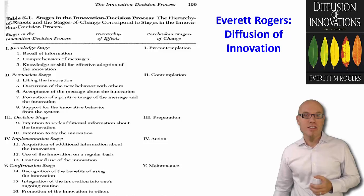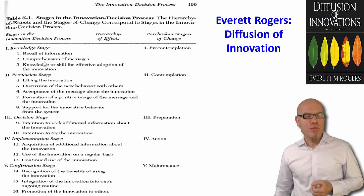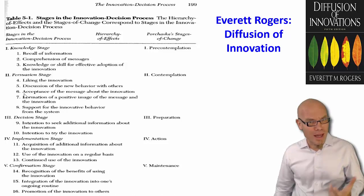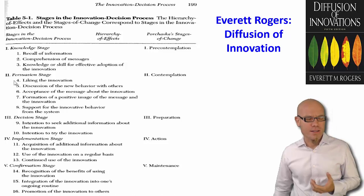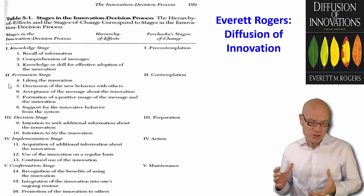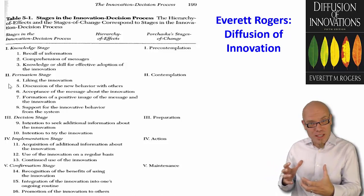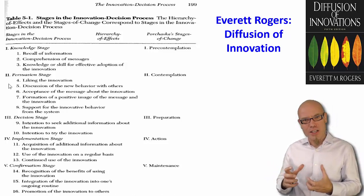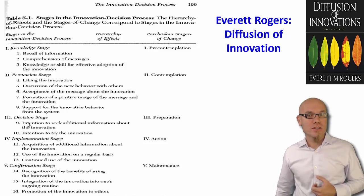The first stage is the knowledge stage — during that stage you get to know the technology. Then the persuasion stage: you are persuaded of the benefits of the technology, and you also evaluate pros and cons. This can be a very social process, because you see others adopting it often, and then you start to evaluate and research it in this persuasion stage.